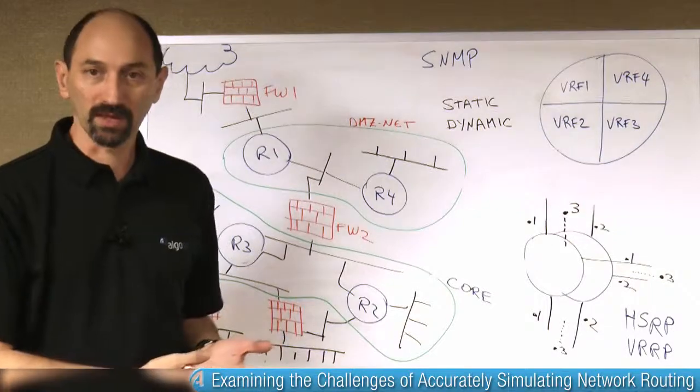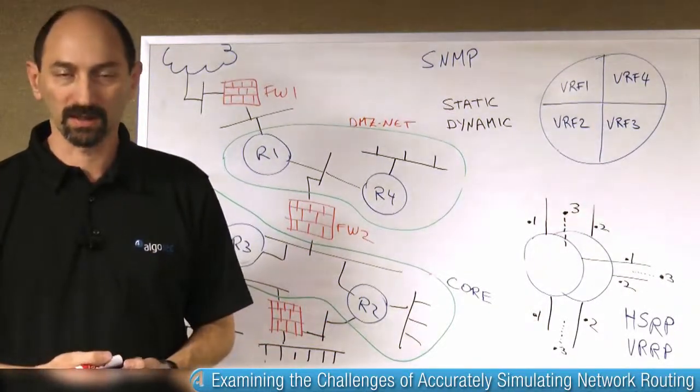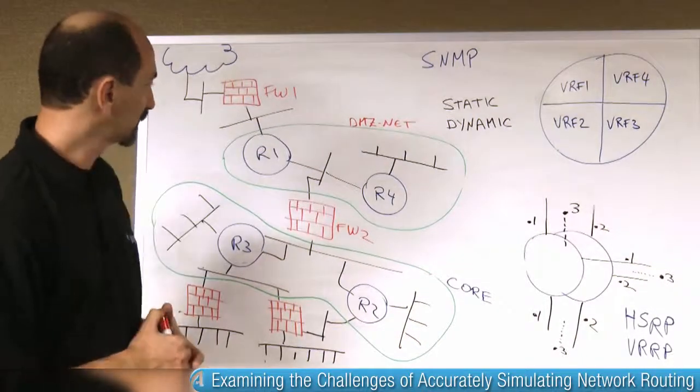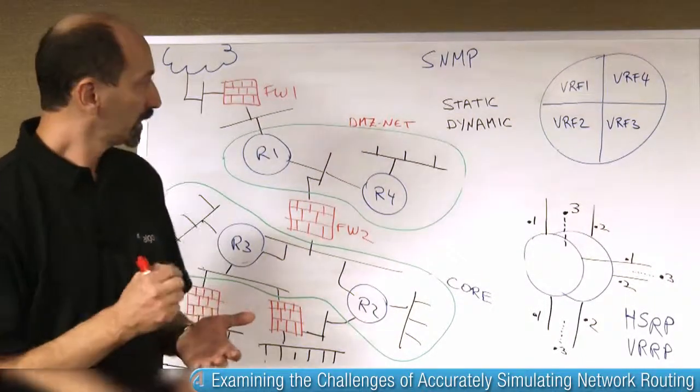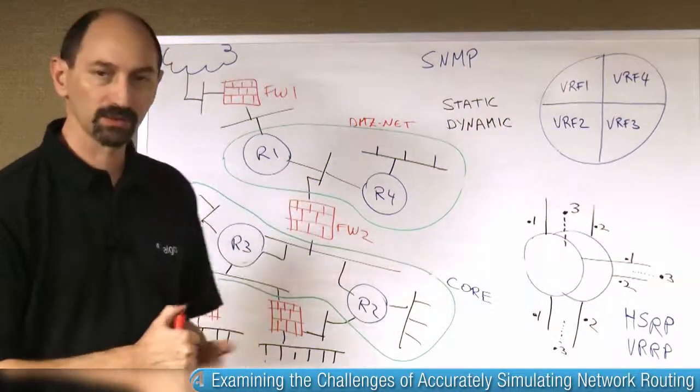And to be able to do that, you need to extract the routing tables from all the relevant routing elements so that you can simulate their decisions. So how would you do that? How would you extract the routing information from all of these devices in your network?